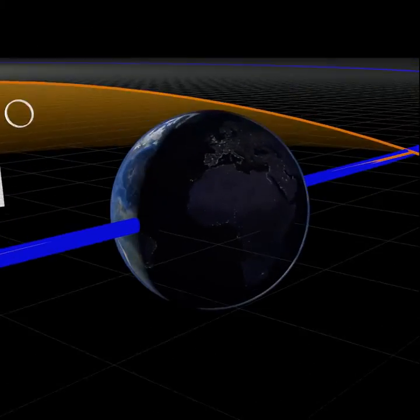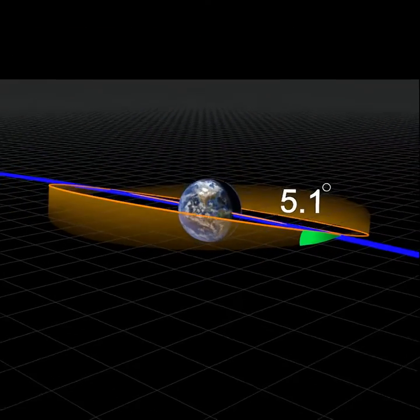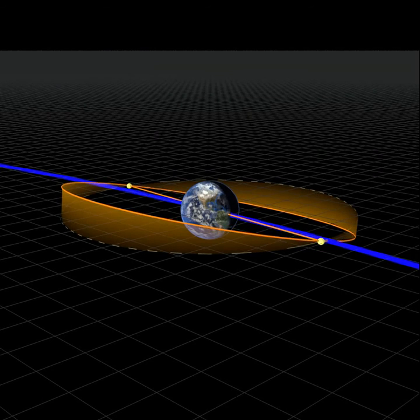Now if all this is not confusing enough, it gets worse. The moon's orbit spins in a circle. We call it the regression of nodes. Here's why.